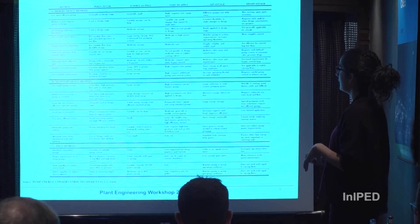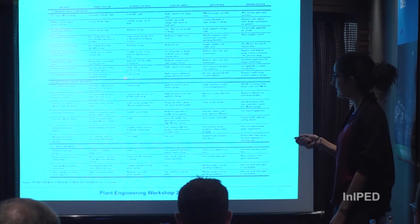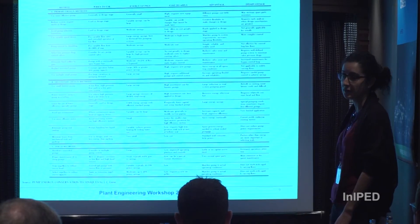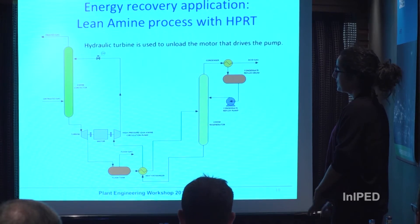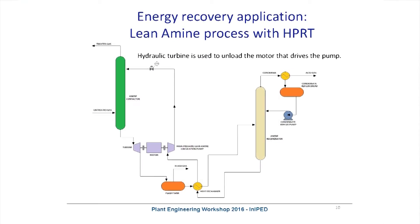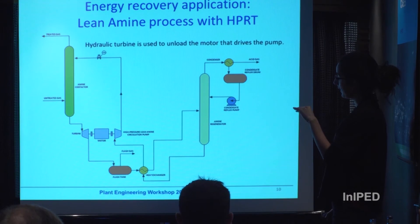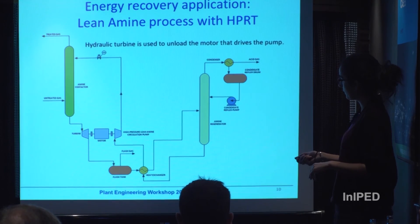This table, taken from a paper already presented at the Turbomachinery Symposium, tries to classify energy saving methods into three different categories: primary methods, secondary methods, and tertiary methods. Hydraulic turbines are classified as secondary methods. In this process, we are substituting the pressure reducing valve with a rotating machine. The turbine does the job of the pressure reducing valve: it takes the amine with H2S and CO2, uses the energy coming from the contactor which works at high pressure, and then uses this energy to help the motor which also helps the pump to send the amine coming from the amine regenerator back to the process.